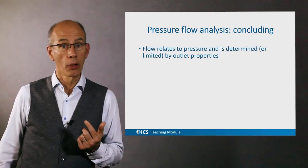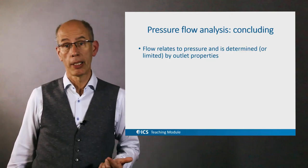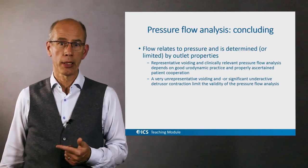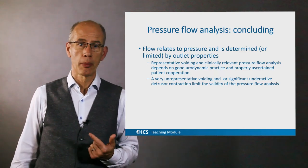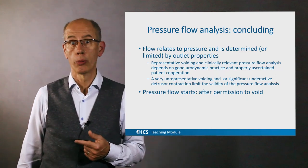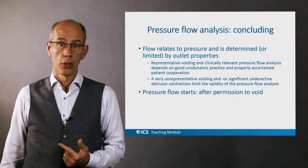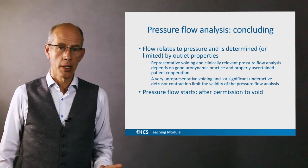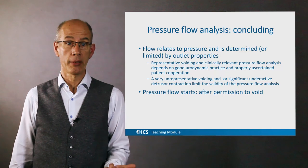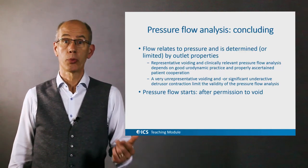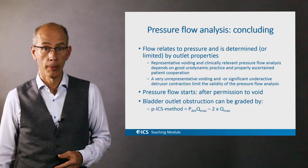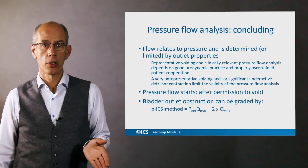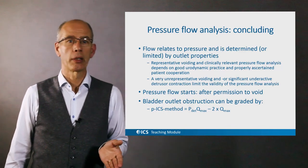In conclusion: flow relates to pressure and is determined by outlet properties. Representative voiding and clinically relevant pressure flow analysis depend on good urodynamic practice and adequate patient cooperation. An unrepresentative voiding or significant underactive detrusor contraction limits the value of pressure flow analysis. Pressure flow analysis starts by definition after permission to void, which is the demarcation between filling and storage phase. Bladder outlet obstruction can be graded by the provisional ICS method: pdet at Qmax minus two times Qmax. Thank you.